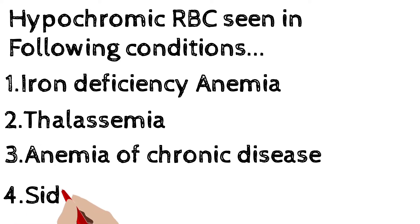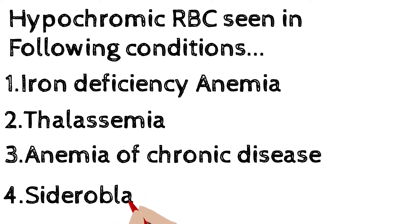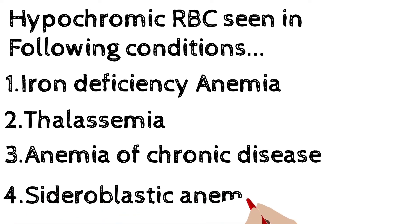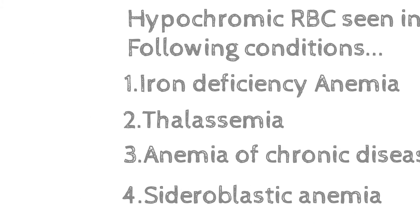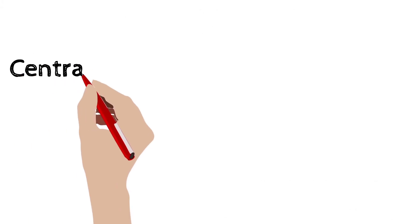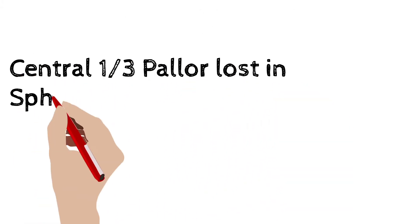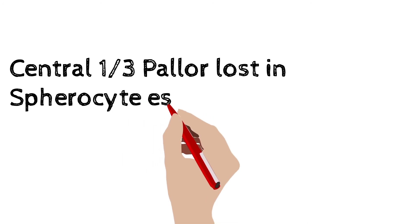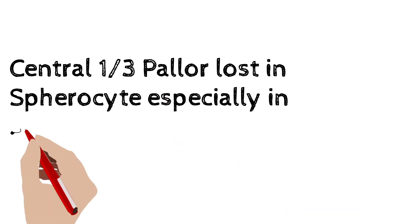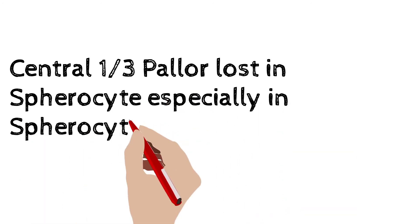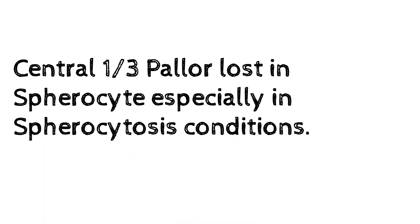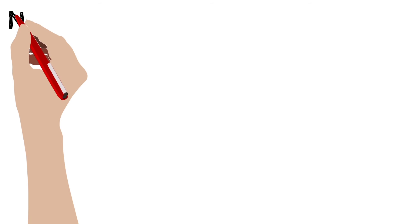The fourth condition is sideroblastic anemia. In all these four conditions, the central pallor of the RBC will be increased because of less hemoglobin. The central one-third pallor is totally lost in spherocytes.